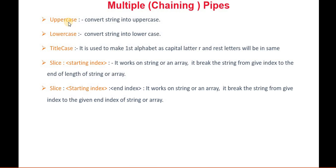So let's see what pipes we are going to discuss. First is uppercase — it is used to convert a string into uppercase. Then we have lowercase and title case. Title case means if I have a name and I want to show the first letter in capital, we use title case. Next is slice — if we want a particular value from a string based on the start index, we use slice with start index, or start and end index.